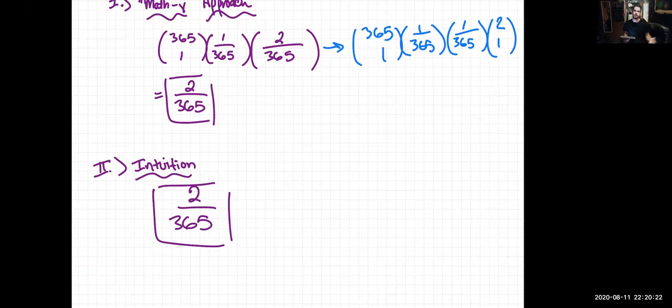If I asked the question, what is the probability that any two given people have a birthday that's exactly one year apart, it would still be two out of 365 because they could either be the year before or the year after. There's always two.